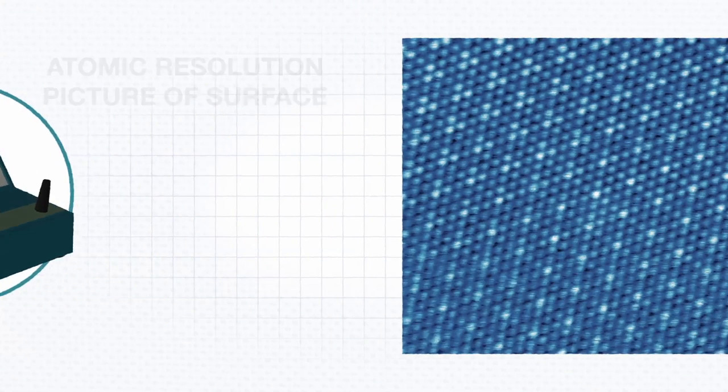We can use this to make an image of the surface. When we move the tip across the surface and record the current, we can obtain an atomic resolution picture of the surface.